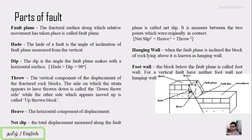The next heading is throw — the vertical component of displacement is called the throw. Once the strata was together and due to faulting it has been thrown down, that vertical displacement is the throw. The side on which the strata appears to have moved down is called the down-throw side, and the side that appears to have moved up is called the up-thrown side.